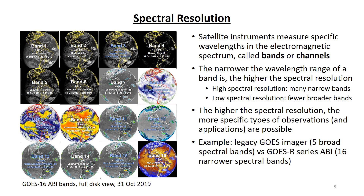Spectral resolution is a satellite term that refers to a range of wavelengths measured by the satellite. Sensors measure specific ranges of wavelengths in the electromagnetic spectrum, called bands or channels. The narrower the wavelength range of a band is, the higher the spectral resolution. A sensor with many narrow bands has high spectral resolution, while a sensor with fewer, broader bands has low spectral resolution. The higher the spectral resolution of a sensor, the more specific types of observations it can make.